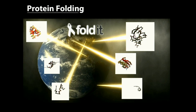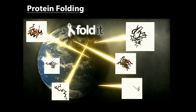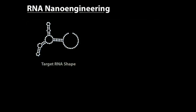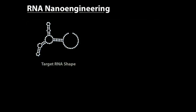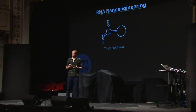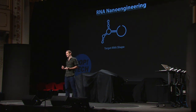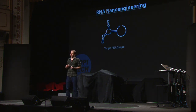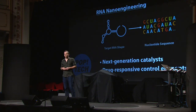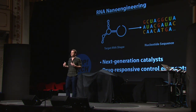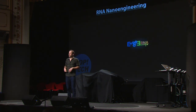Let me give you another example: nanoengineering. This problem is basically the reverse of the protein folding problem. In this case the shape is known — it's something we want to build — and we want to find a sequence of nucleotides. We're going to deal with RNA, which folds into this shape naturally in a cell. We created a game for this too, called Eterna.